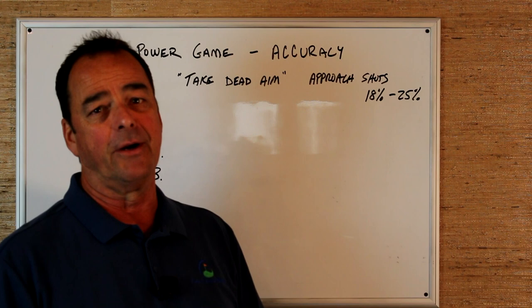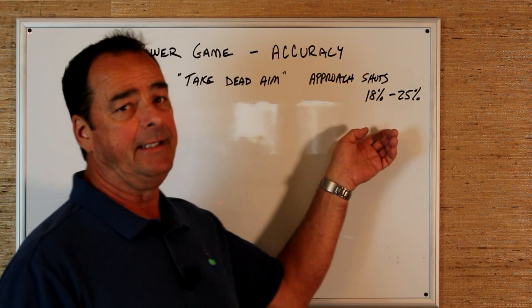So these are our approach shots where we want to knock it onto the green and knock it stiff. We want to take dead aim and our approach shots make up about 18 to 25 percent of our total score.